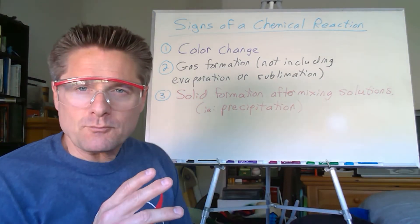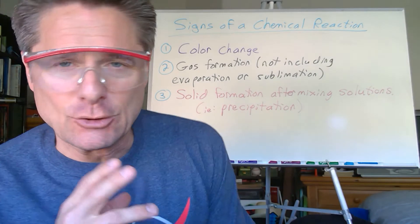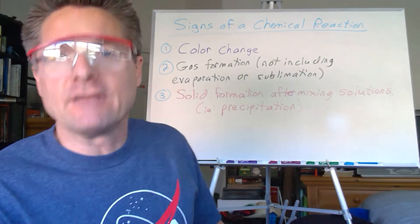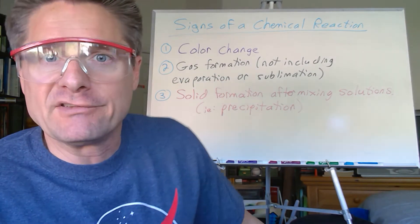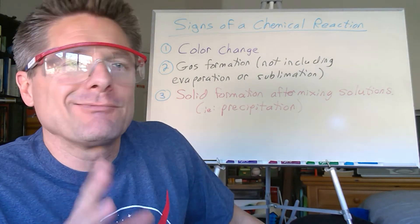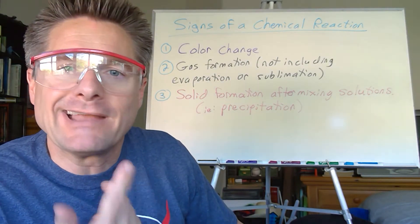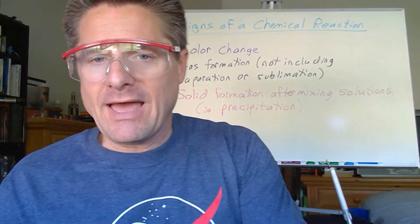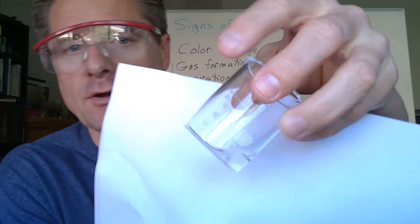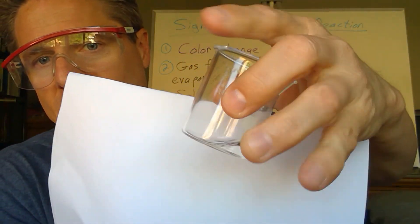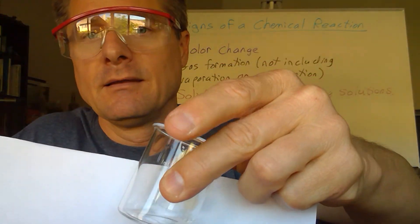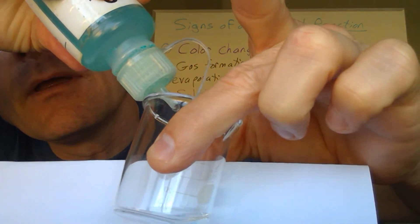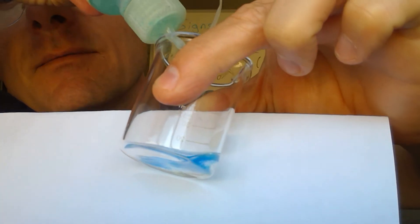So solid formation, and I'm going to add on there after mixing solutions. This is typically where we get it from. So you couldn't do like freezing, like take liquid water and freeze it and create ice. Oh, well, there's a phase change. Well, that's a physical change. We haven't changed the identity. This has to be a change in identity. So let's say we've got a clear colorless solution here. Let's add something. And again, at this point, we don't care what it is.